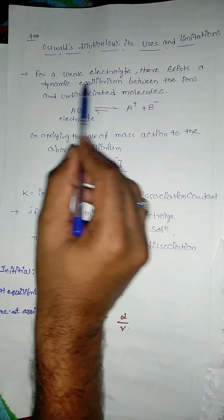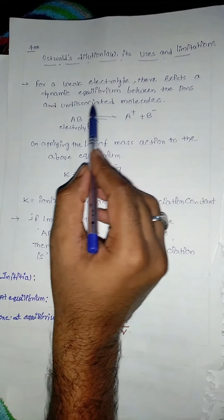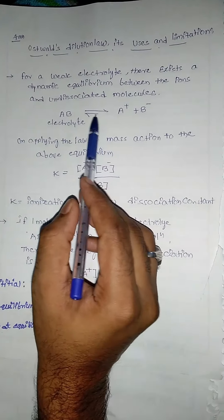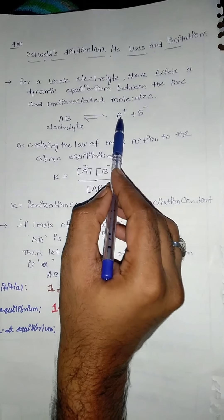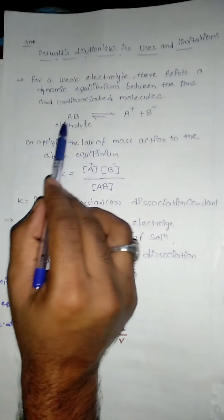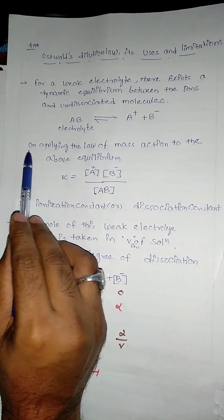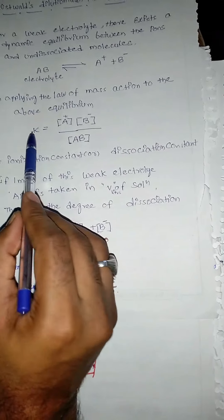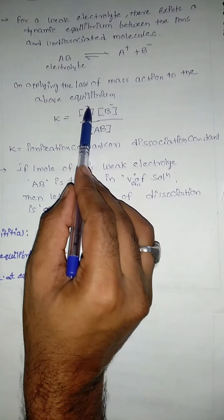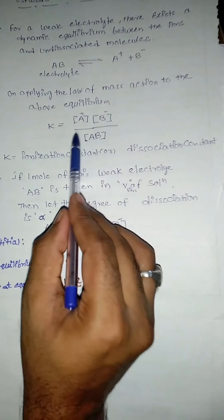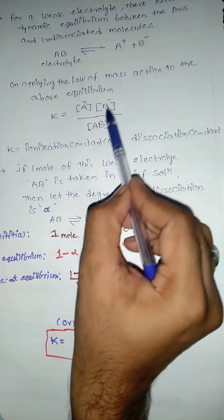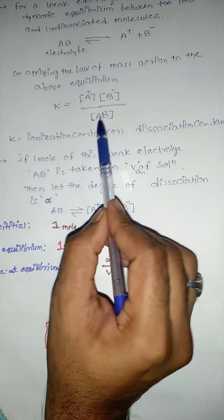There exists a dynamic equilibrium between the ions and dissociated molecules. For example, AB is the electrolyte and it dissociates into cation A⁺ and anion B⁻. On applying the law of mass action to the above equilibrium, we can write that K = [A⁺][B⁻] / [AB].